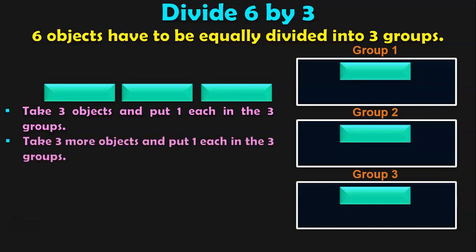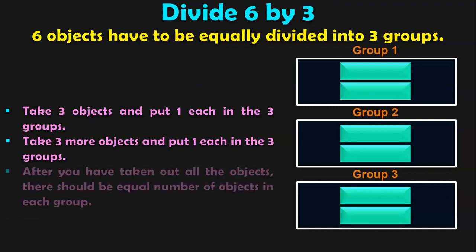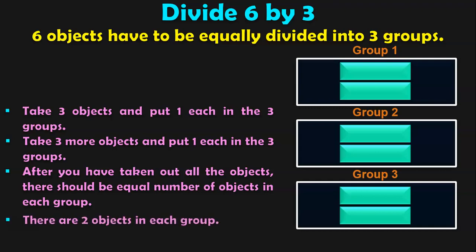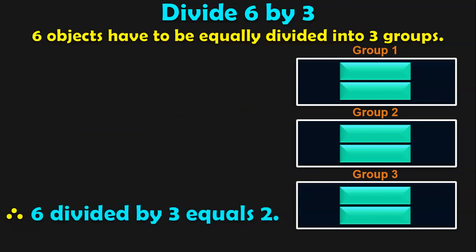Then once again, take 3 more objects and put 1 each in the 3 groups. After you have taken out all the objects, there should be equal number of objects in each group. There are 2 objects in each group, which means that 6 divided by 3 equals 2.